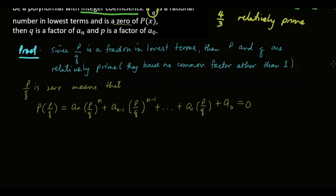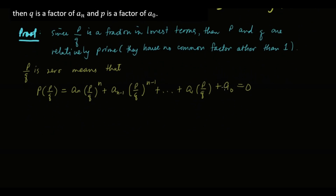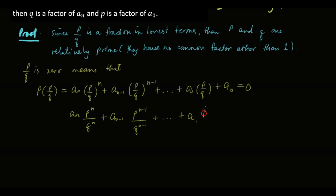Now let's work on this equation that equals 0 and multiply everything by Q raised to n in order to eliminate the denominators. By the property of exponents, multiplying each term by Q^n will clear the denominators. So the expression becomes: a_n times (P^n / Q^n), plus a_(n-1) times (P^(n-1) / Q^(n-1)), continuing down to a_1 times (P/Q), plus a_0, equals 0. Now let's multiply both sides by Q raised to n.